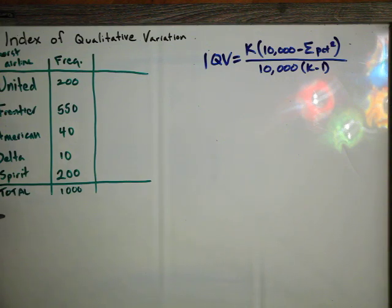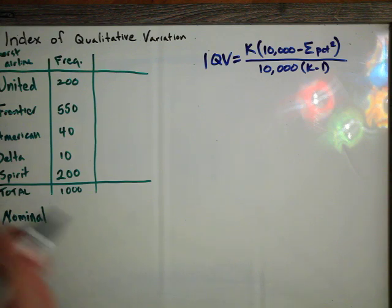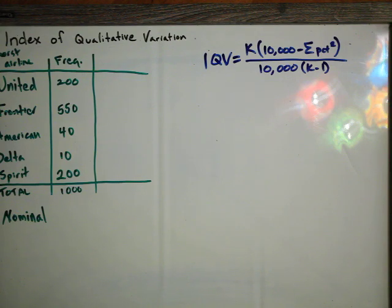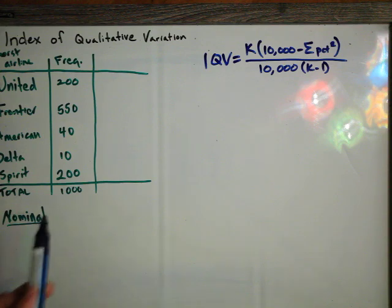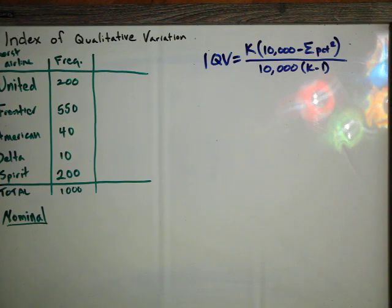This is nominal data because the categories are not numerical. You can't put them in any order and you can't subtract them from each other — they are just categories, just different groups. One's United, one's Frontier, one's American, one's Delta, and one is Spirit.